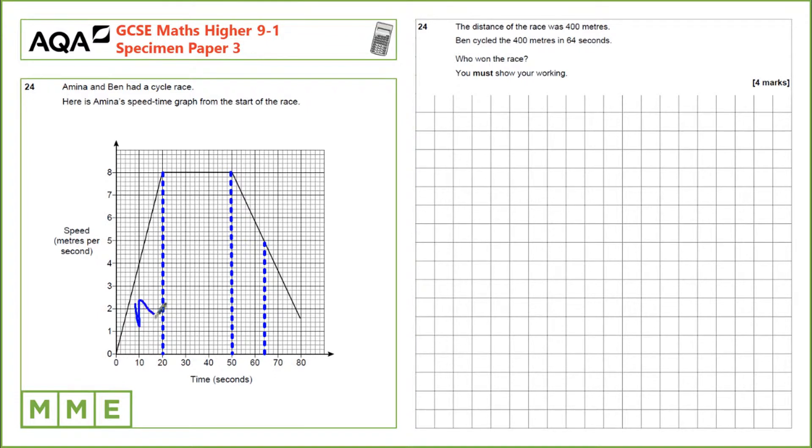This one here, we've got a triangle, we'll call that A. This one here is a rectangle, we'll call B. And this one I divided at 64 seconds because that's when Ben finishes the race.